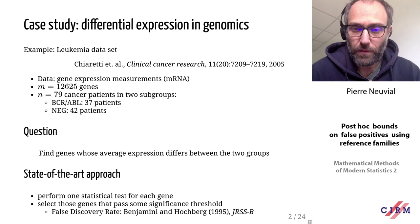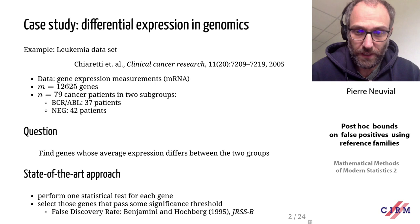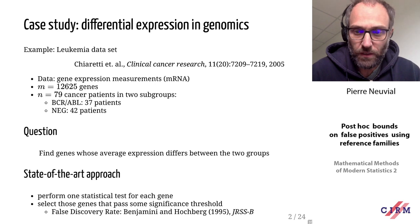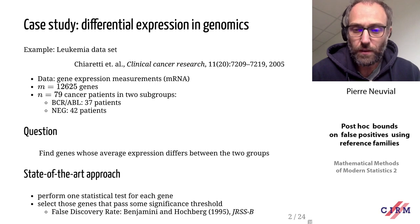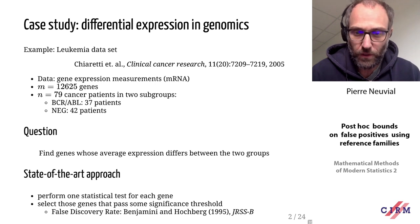The question we want to address is finding genes whose average expression differs between the two groups. The state-of-the-art approach is to perform one statistical test per gene, giving a multiple testing setting with around 12,000 tests. Typically, people select genes based on significance — computing a p-value for each gene and applying a standard multiple testing procedure such as the Benjamini-Hochberg procedure to control the false discovery rate.